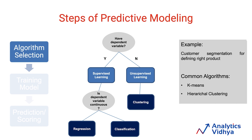If the dependent variable is not present at all, we use unsupervised learning methods such as clustering. Predictive modeling is done for two things: prediction and inference. Unsupervised learning helps us in deriving inference. For example, a company which wants to segment its customers into unique groups to plan product placement doesn't want to predict anything, but to infer which customers are similar based on their past purchases so that they can be clustered in a unique group.